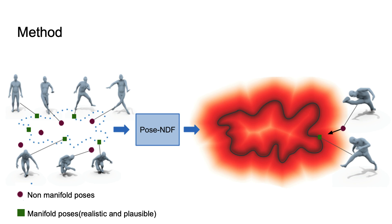This formulation preserves distances between poses and allows traversal of the pose space along the negative gradient of the distance function, which points in the direction of maximum distance decrease. Using the gradient of the distance in pose space from an initial potentially non-plausible pose, we always find the closest point on the manifold of plausible poses.